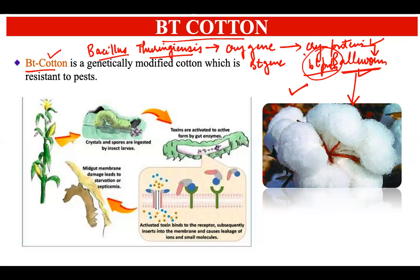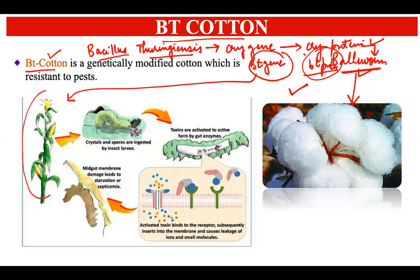Scientists isolated the Bt gene from the Bacillus thuringiensis bacteria and integrated it into the genome of cotton. As a result, this cotton plant now produces the cry protein as well.